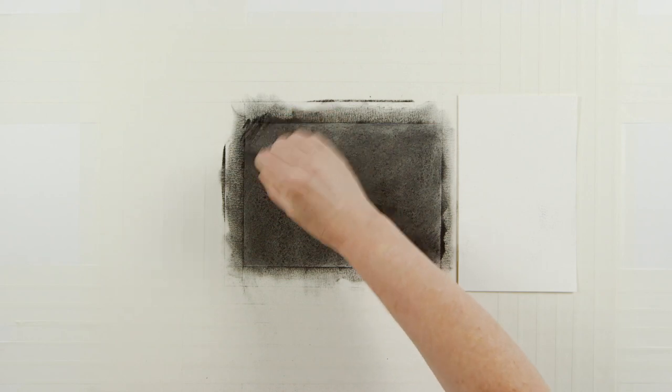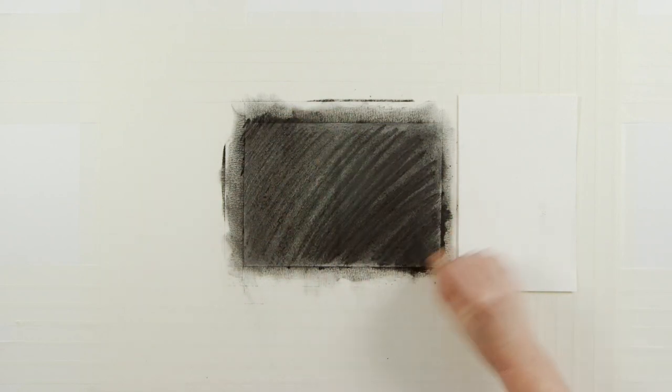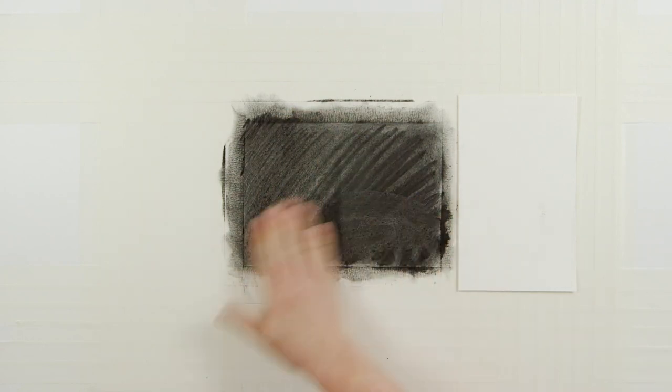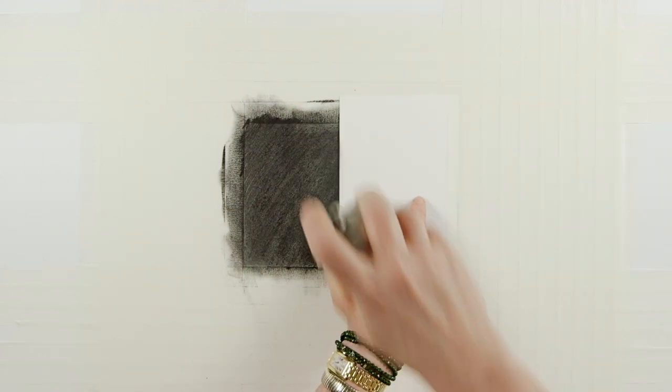Once dry, I'll add another layer of charcoal and rub away any unfixed charcoal. Remask with the flap and spray again.